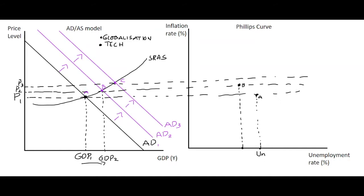Point C on our AD-AS model shows that GDP has also increased due to aggregate demand increasing, but again prices have only increased somewhat. The GDP increase is represented by a new unemployment rate which has dropped again to U2, and we show a new equilibrium with a slightly higher price level.